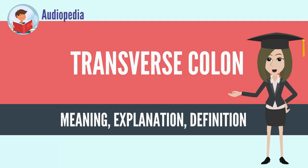It is in relation, by its upper surface, with the liver and gallbladder, the greater curvature of the stomach, and the lower end of the spleen; by its undersurface, with the small intestine; by its anterior surface, with the posterior layer of the greater omentum and the abdominal wall.